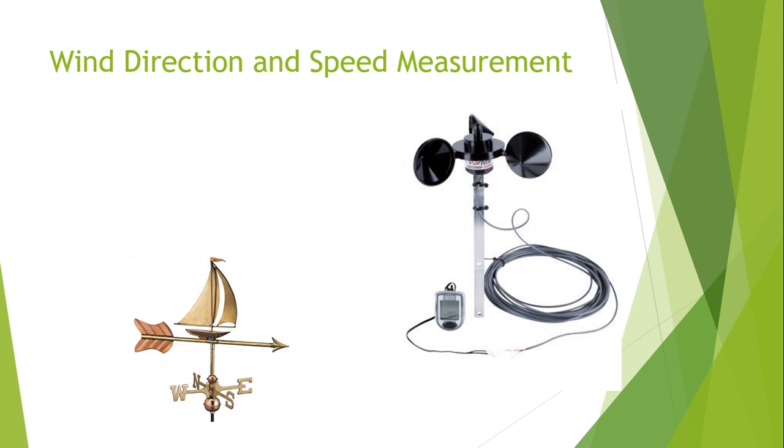Next are the two important instruments that are basically used to measure the speed of the wind and to find out the direction of the wind. A revolving pointer to show the direction of the wind is typically mounted as shown in this figure. This is known as weathervane.